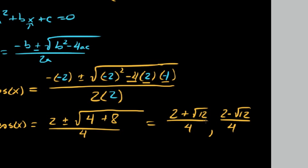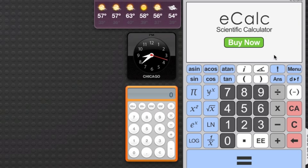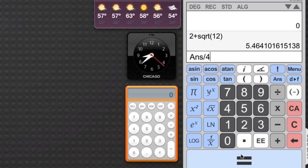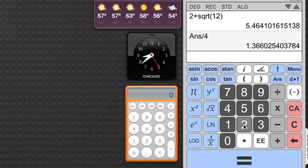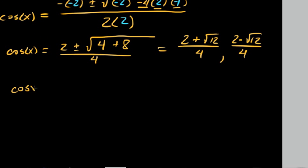So in order to get a decimal here, let's go ahead and pull out a calculator. So we say 2 plus radical 12, enter, and we'll split this 4 ways. So divide it by 4. So there's our first decimal. Then we say 2 minus radical 12 divided by 4. So we get 1.3660 and negative 0.3660.